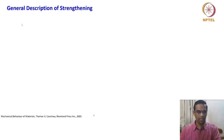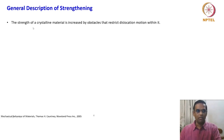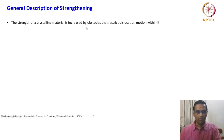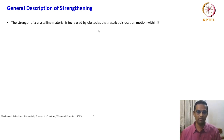The first topic is a general description of strengthening. The strength of a crystalline material is increased by obstacles that restrict dislocation motion within it. To stop dislocation motion, we have seen several forms — including the friction stress, the Peierls stress, that exists in a perfect lattice.